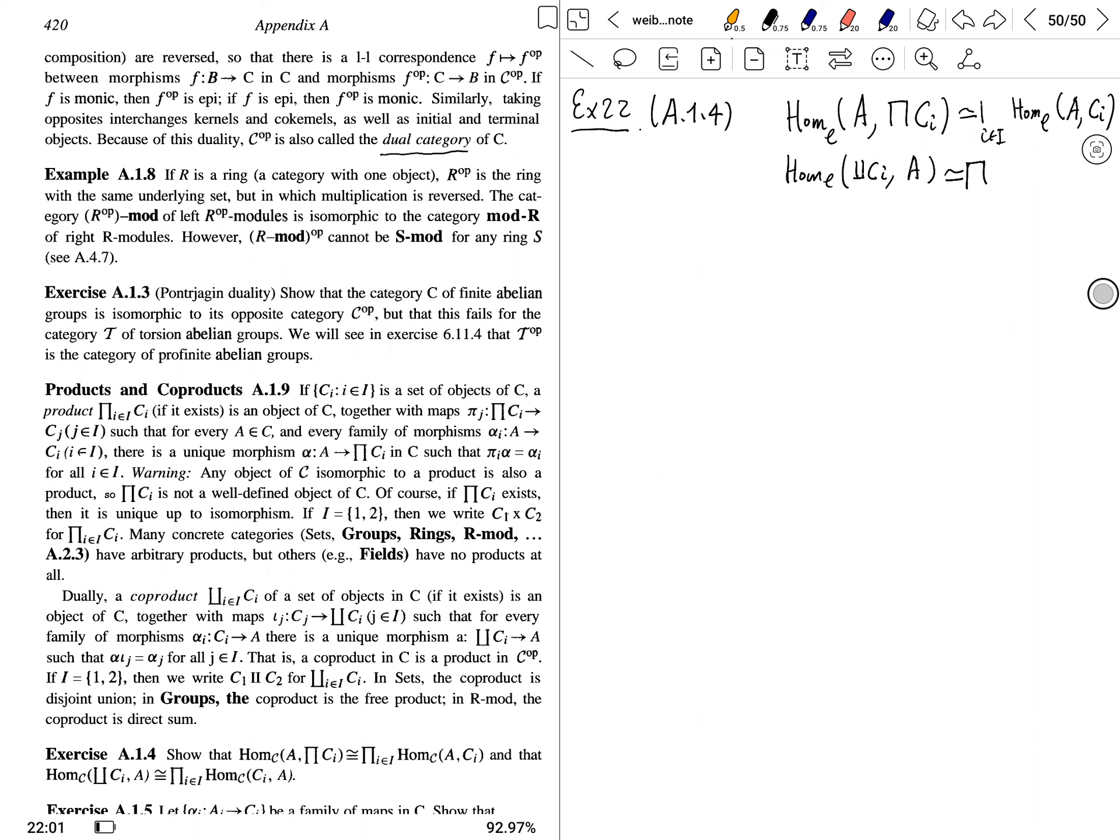Basically, you could move the second position product or the first position coproduct outside and it becomes product. So a way, a trick to remember this statement is that you're thinking of there are three positions. You start here, product.